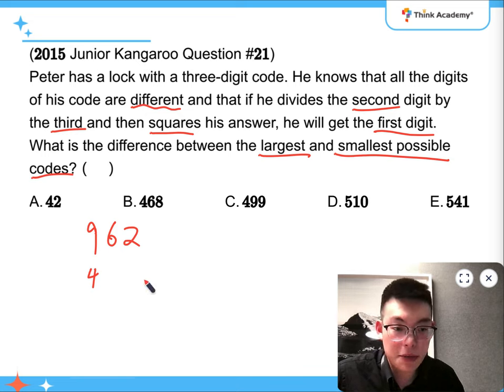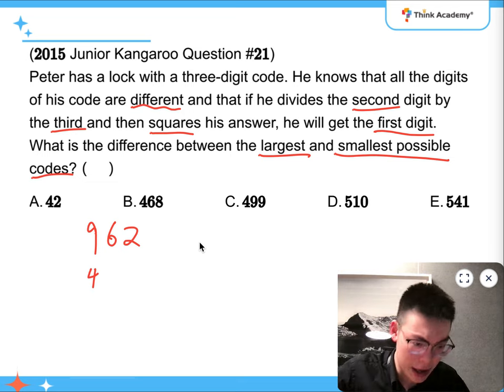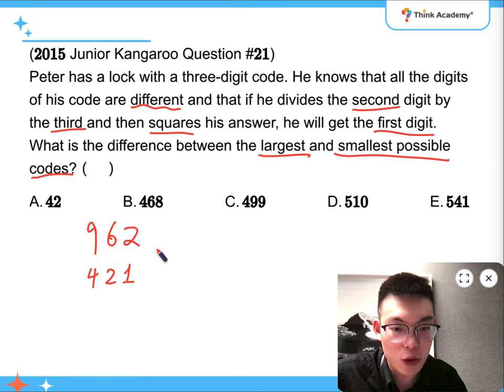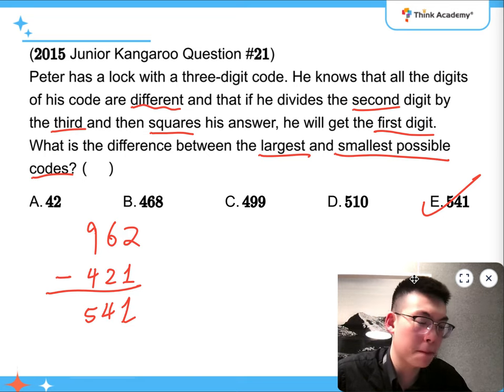What divided by what has a 2 times relationship? If you're choosing the smallest pair, it's going to be 1 and 2. 2 is double that of 1, and all the digits are different. So the difference between the maximum and minimum possible codes is going to be 541. The answer is E.